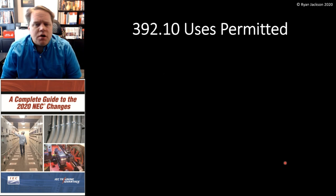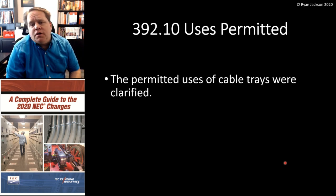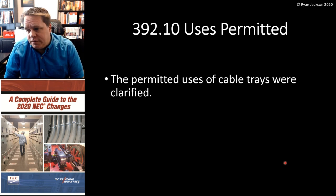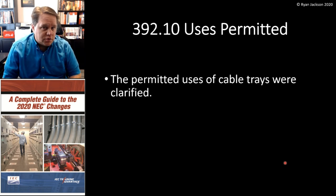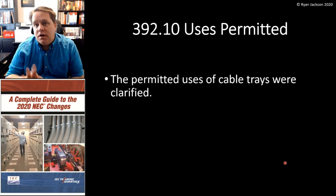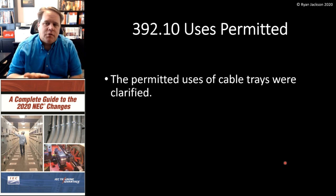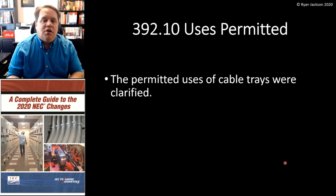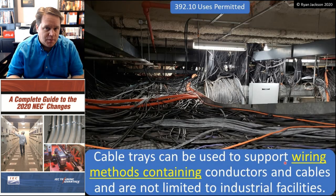392.10 Uses Permitted — the permitted uses of cable trays were clarified. Just like anything in Chapter 3 from Article 320 on up, we have uses permitted and uses not permitted. But cable tray is a bit unusual, and the reason for that is cable tray is not a wiring method — it's just a support mechanism for wiring methods.